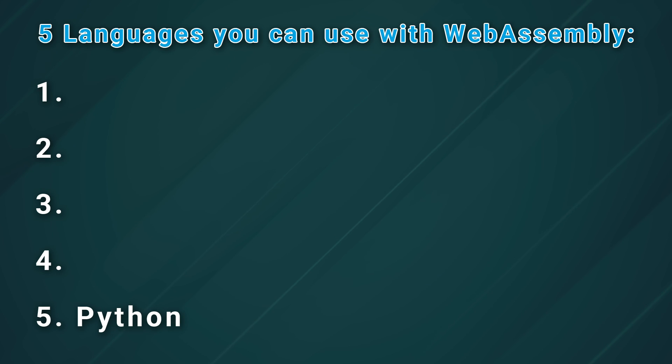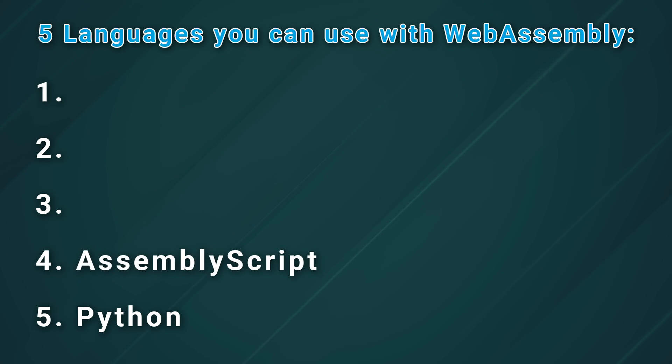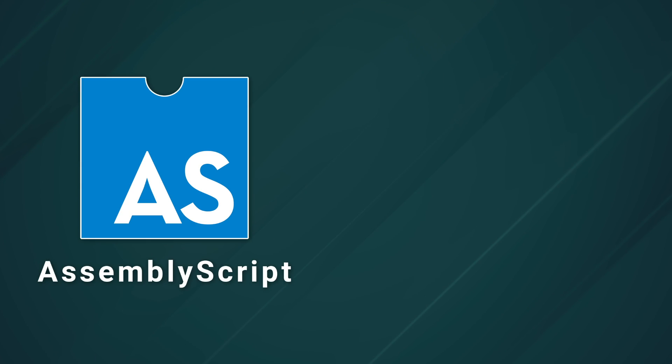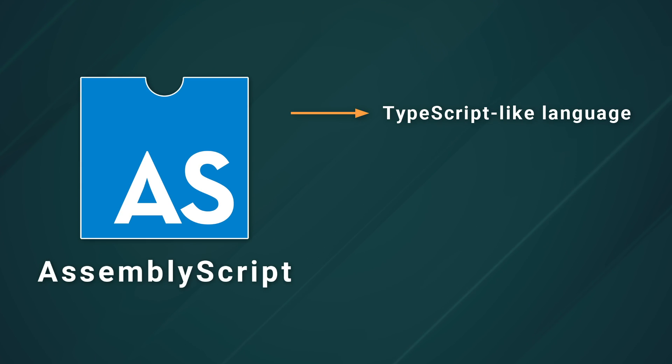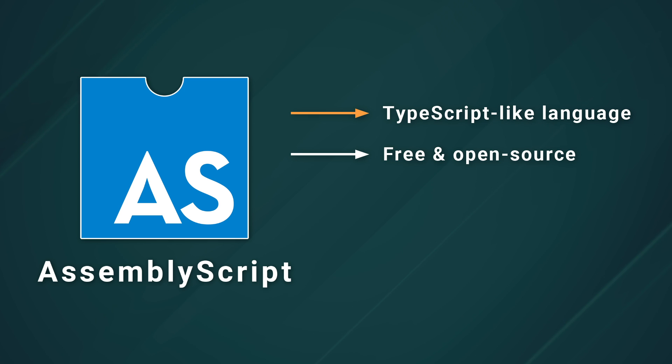Next up, number four: AssemblyScript. Ever wanted to compile your TypeScript — actually compile it? Well, here's your chance. AssemblyScript is a TypeScript-like language that takes advantage of the WebAssembly feature set. It's a free and open-source language, providing a high-level syntactic feel while offering the ability to manage memory at a granular level similar to C.